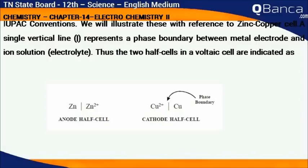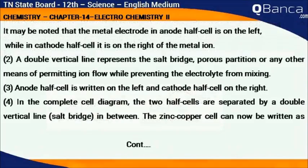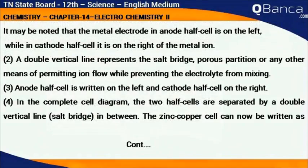and Cu²⁺ | Cu for the cathode half cell. The single vertical bar represents the phase boundary. It may be noted that the metal electrode in the anode half cell is on the left, while in the cathode half cell it is on the right of the metal ion.